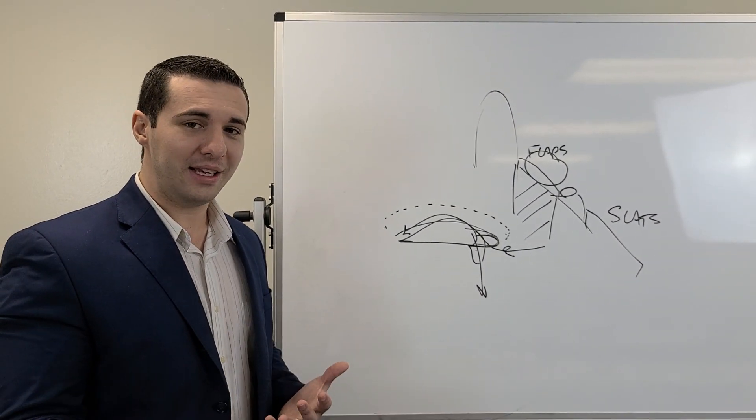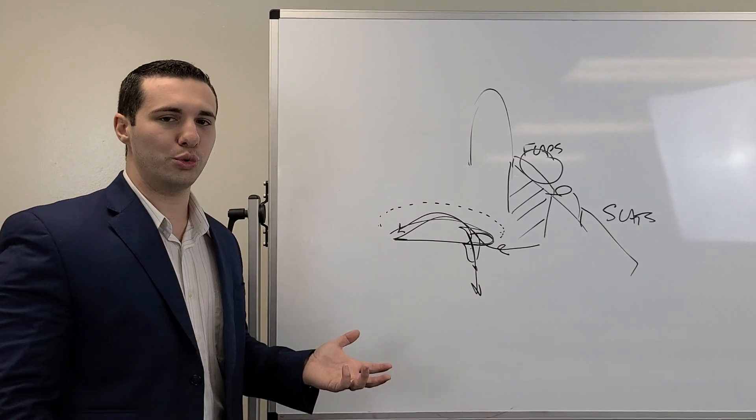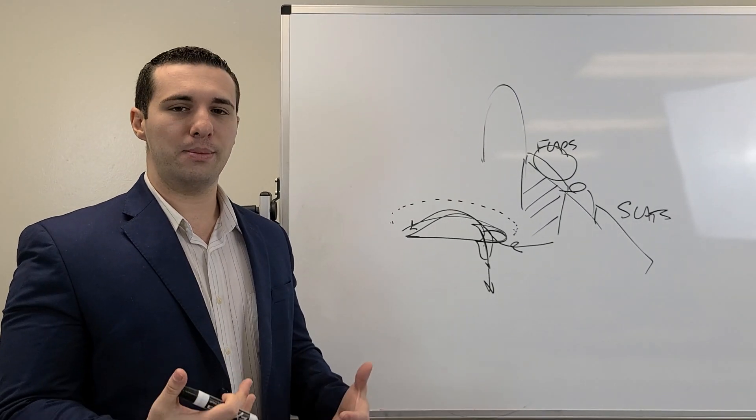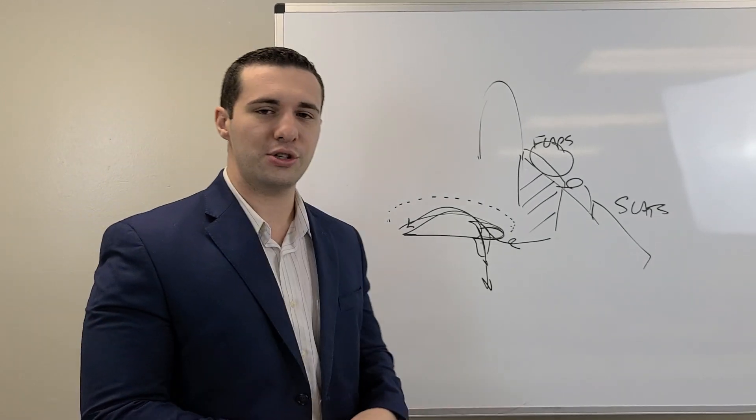So gravity would be working to have our leading edge flaps droop, given the fact that they're extending downward. Gravity would really be the one to take hold and extend them in the downward direction if they're not actually pressurized.